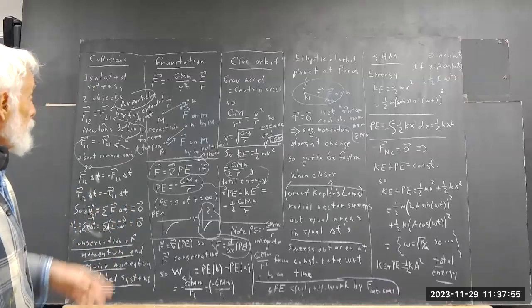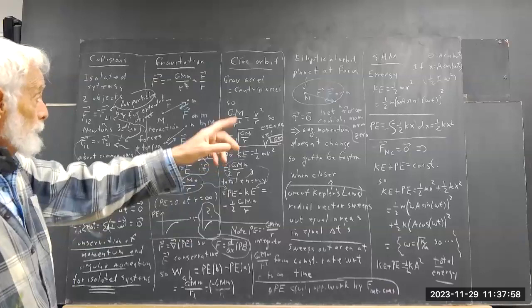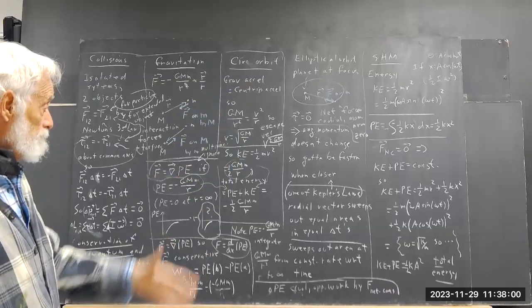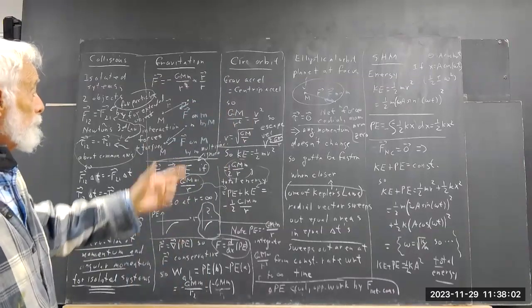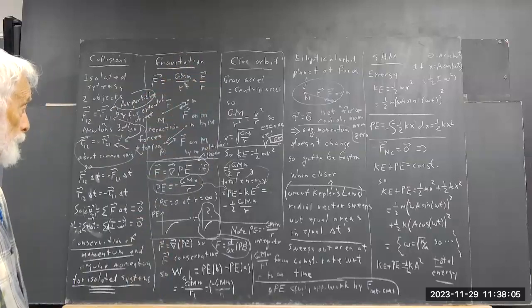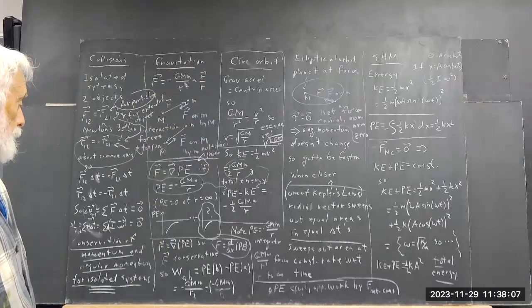So we have collisions, gravitation, circular orbit, elliptical orbit, simple harmonic motion, gravitational acceleration equals centripetal acceleration, all that kind of stuff.